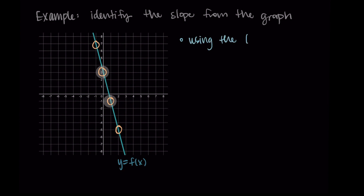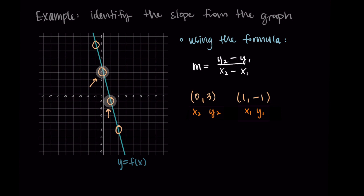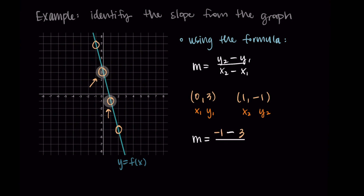Let's verify using the formula. m is the change in y over change in x, which is y2 minus y1 divided by x2 minus x1. Using (0, 3) as x1, y1 and (1, -1) as x2, y2 — note you could also label them in the opposite order, as long as x1, y1 are one point and x2, y2 are the other. So y2 minus y1 is negative 1 minus 3, divided by x2 minus x1, which is 1 minus 0. The numerator is negative 4 and the denominator is 1, so negative 4 over 1 simplifies to negative 4. We got the same slope.